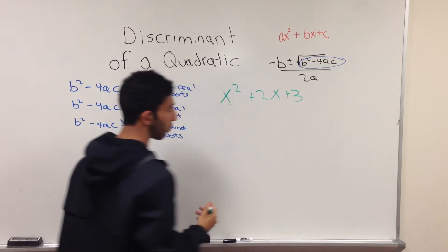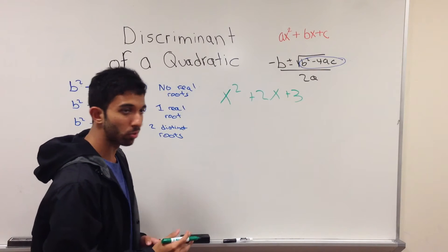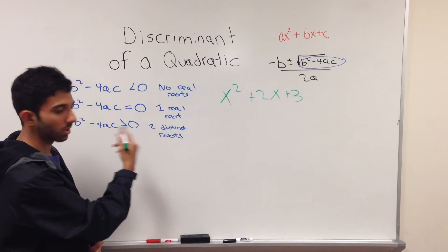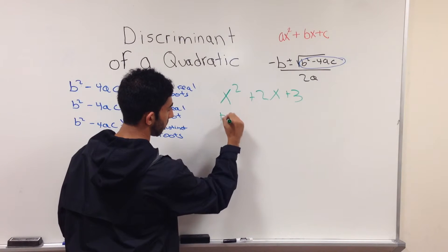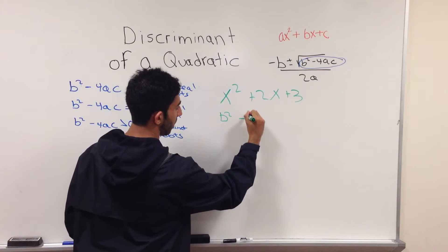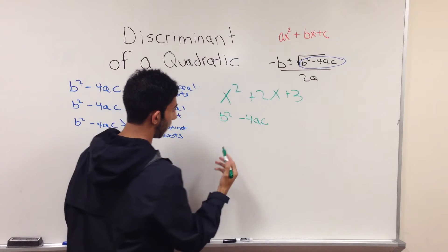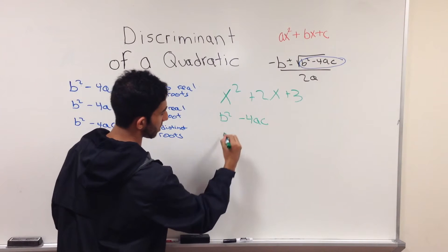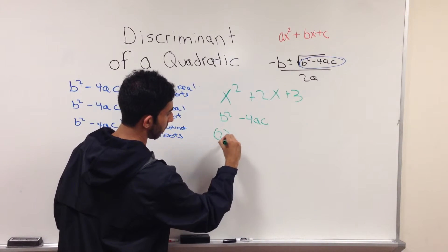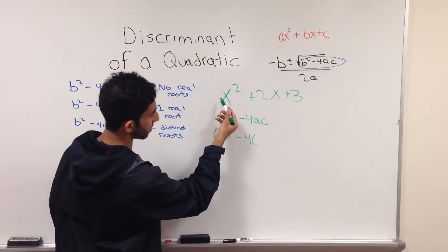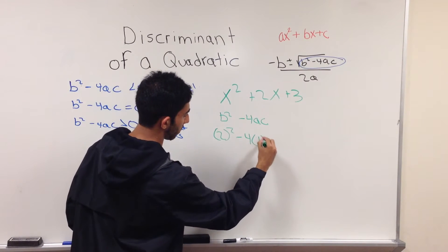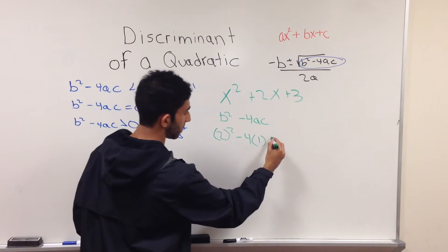In this function, we will take the discriminant and use it to find how many roots this example has. We will do b² - 4ac. b is 2, so b² is 2², minus 4, and a is 1 since there is 1 in front of x, and c is 3.